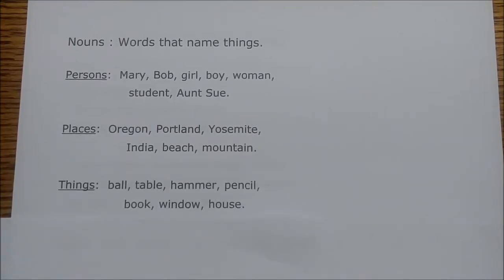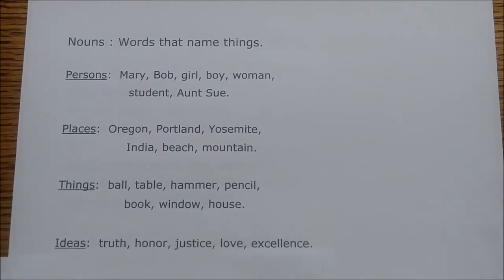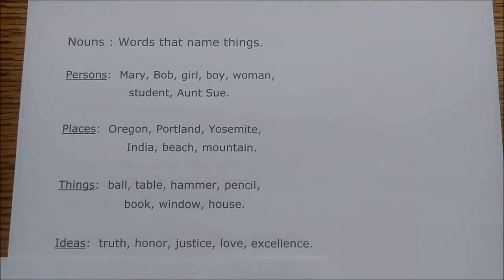Nouns can be things — objects in our environment. Ball, table, hammer, pencil, book, window, house — these are examples of things, and they are therefore nouns. And finally, ideas — abstractions that we can't actually touch but we know exist: truth, honor, justice, love, excellence. Those kinds of things we call ideas, and those are also nouns. Each of these — persons, places, things, and ideas — name something.